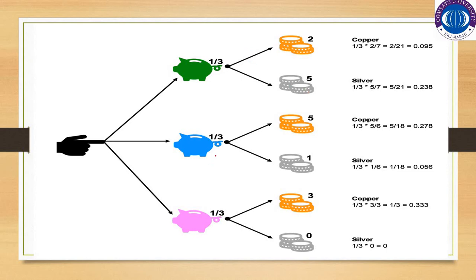Each piggy bank has two types of coins: silver coins or copper coins. The green piggy bank has 2 copper coins and 5 silver coins. So the probability of selecting a copper coin from the green piggy bank is 2 divided by 7 (since 2 plus 5 equals 7). The probability of selecting a silver coin from the green piggy bank is 5 by 7.